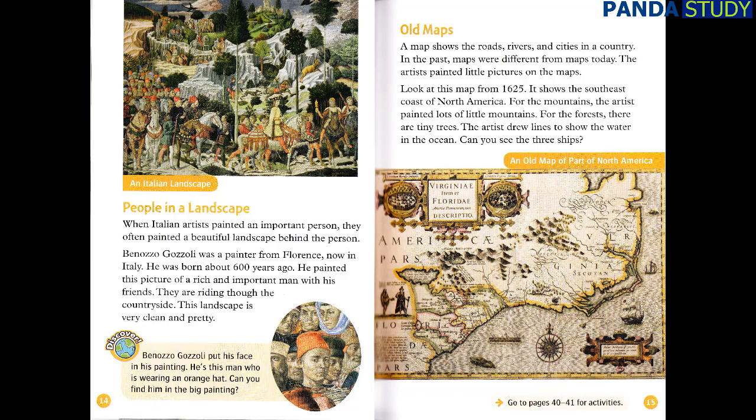A map shows the roads, rivers and cities in a country. In the past, maps were different from maps today — artists painted little pictures on the maps. Look at this map from 1625. It shows the southeast coast of North America. For the mountains, the artist painted lots of little mountains. For the forests, there are tiny trees. The artist drew lines to show the water in the ocean. Can you see the three ships?